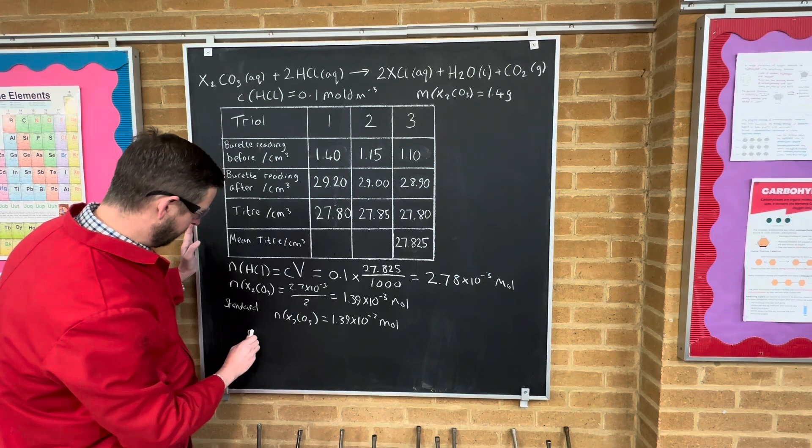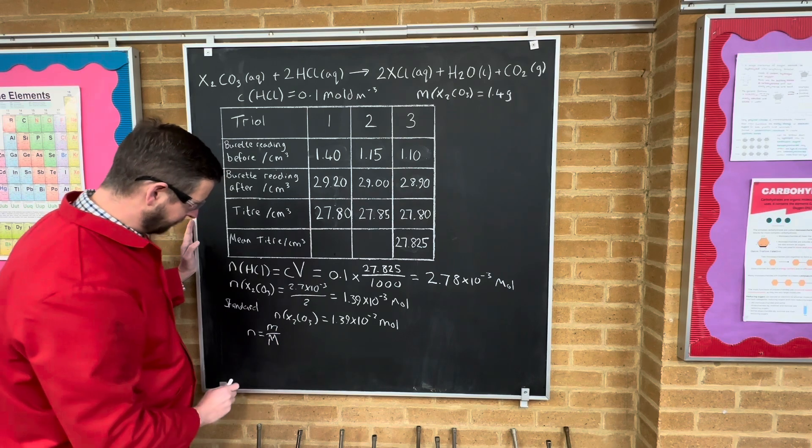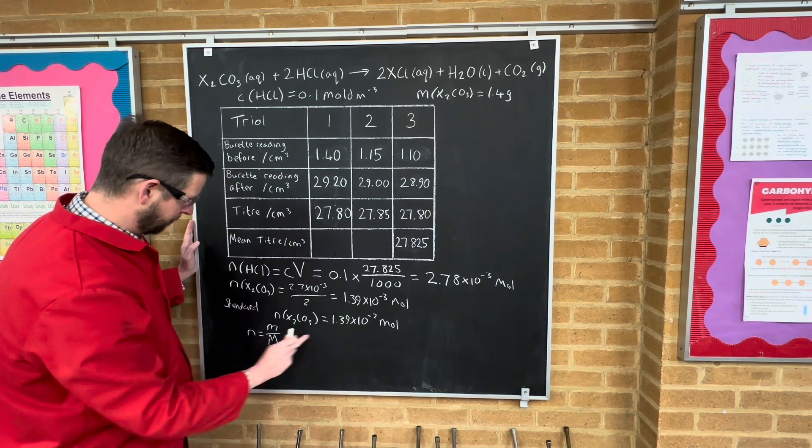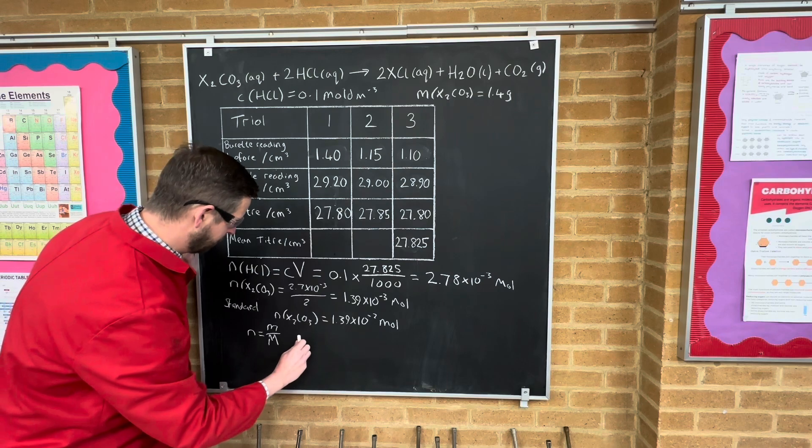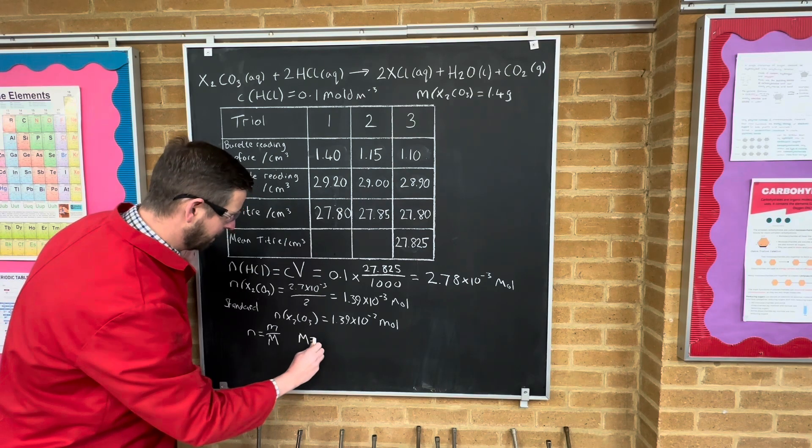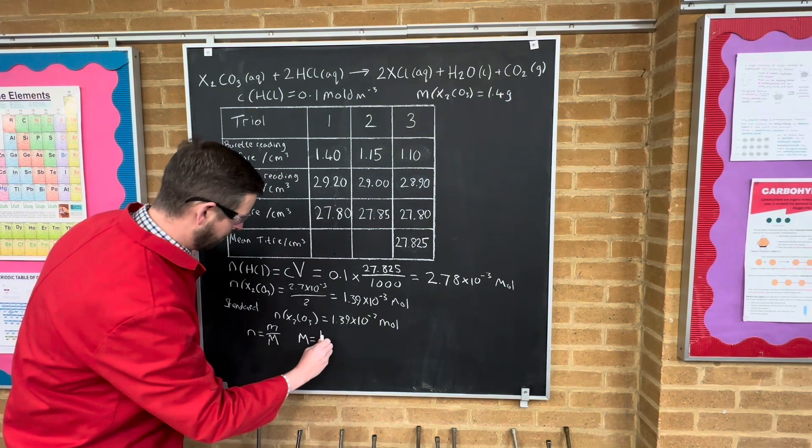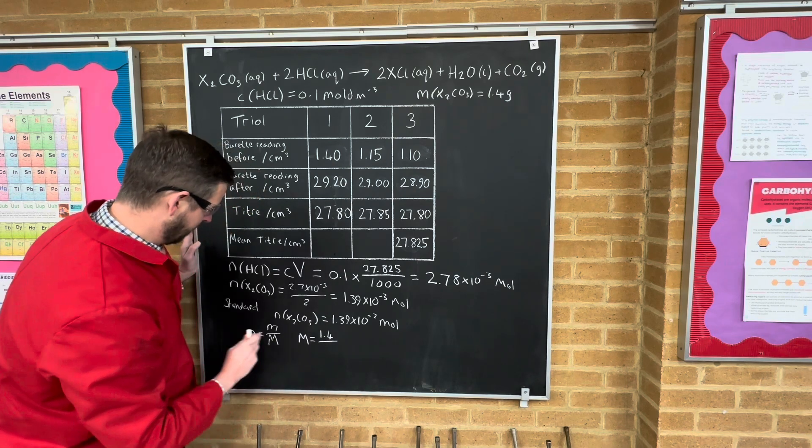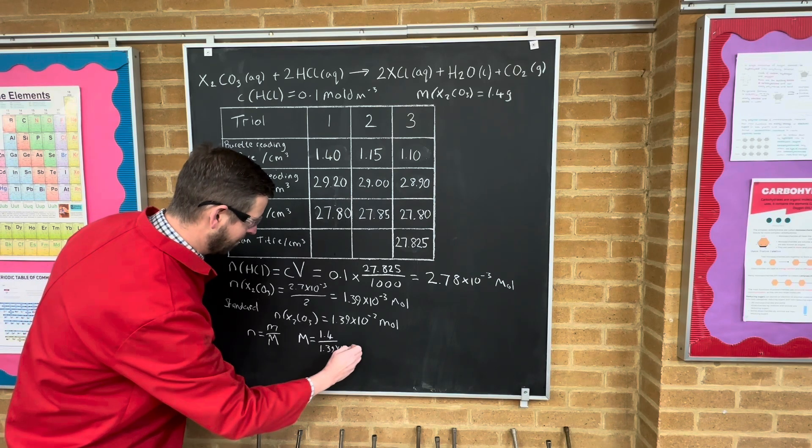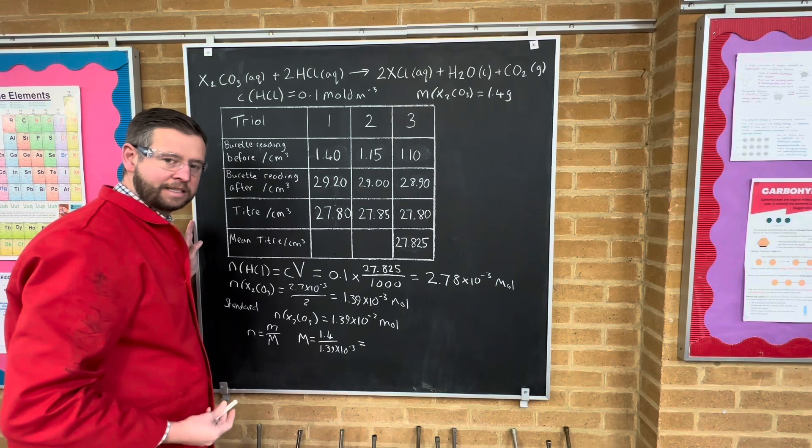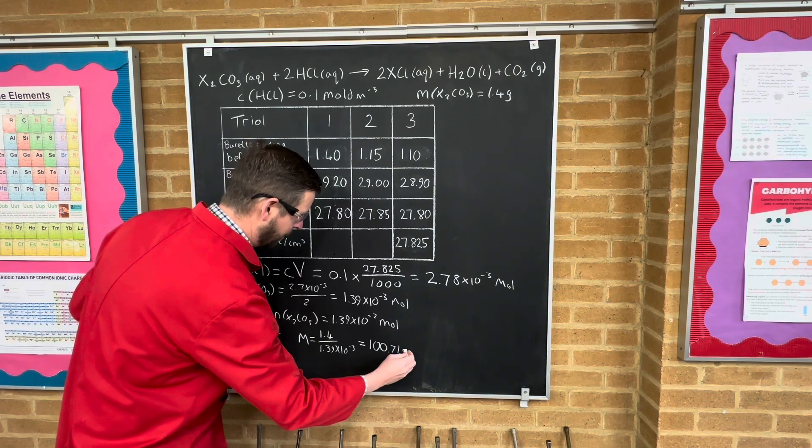Now since the number of moles is equal to the sample mass divided by the molar mass, we've got the number of moles and we know what the sample mass was. It was 1.4 grams, that's what we put in to start. So the molar mass, or the relative formula mass if you like, is equal to the sample mass which was 1.4 divided by the number of moles which is 1.39 times 10 to the minus 3. And the answer comes out with this calculation as 100.71 grams.